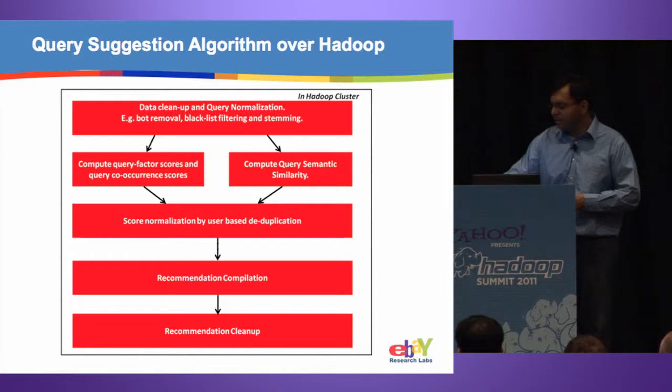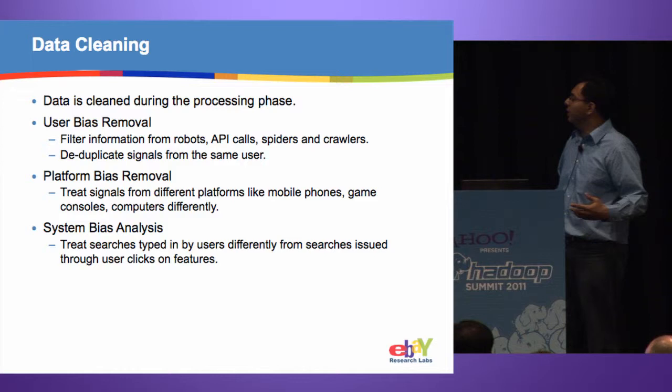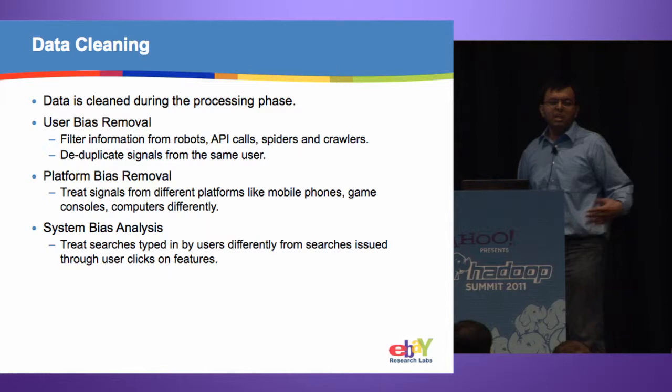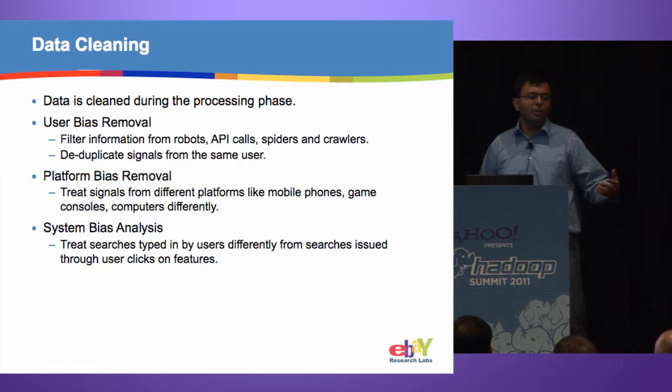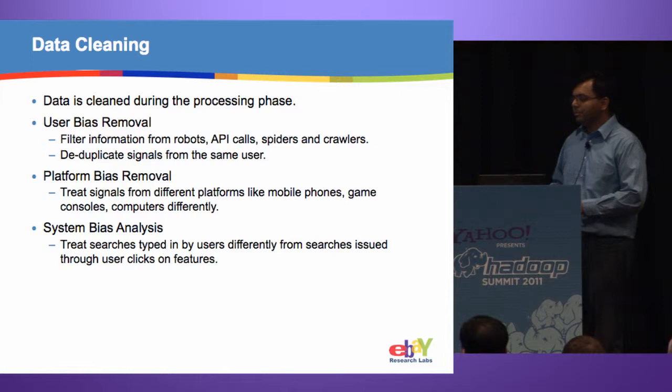I'll walk through the details of the MapReduce flow and talk a bit more about data cleaning. We did user bias removal — removing robots, keeping only real humans, and deduplicating signals. We did platform bias removal: to build a recommendation system for desktop and laptops, we don't want data from iPhones and gaming consoles since their interfaces are different. We also removed system biases, differentiating queries typed by users from queries generated by clicks.